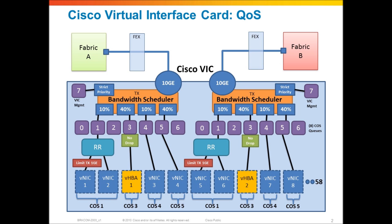For Fibre Channel over Ethernet, by default, any adapter VHBA is assigned to a no-drop class. This tells the adapter that any traffic coming through cost-based queue 3 is going to be using priority-based flow control out of these links to ensure that there are no drops for that traffic. That's on by default for VHBAs.